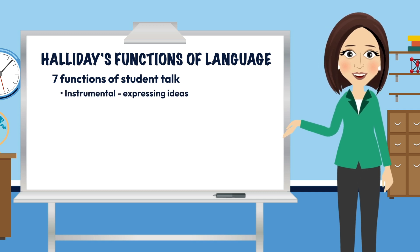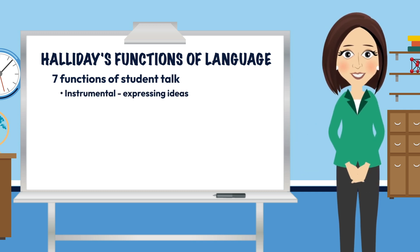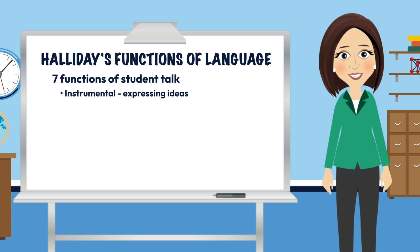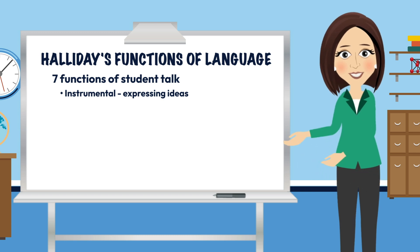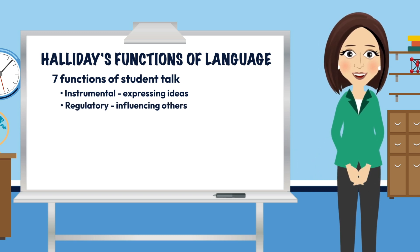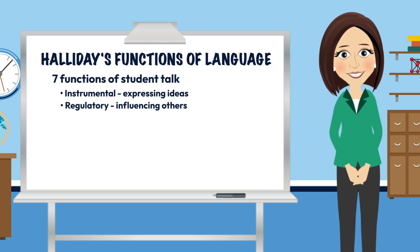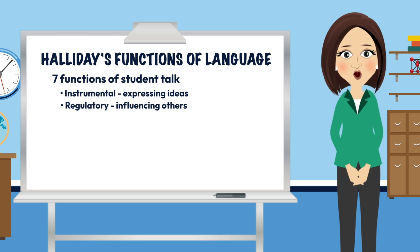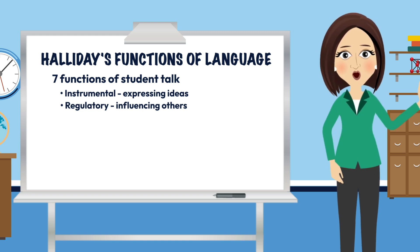The first function is instrumental, which relates to talk designed to get things done, such as asking someone for help with something. Regulatory language is talk that sets tasks for others to do, such as saying, 'You do that one.'